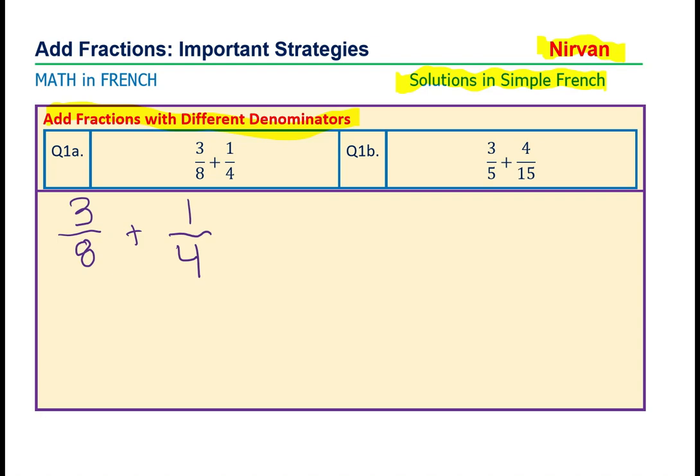Alors, nous devons faire, nous devons chercher le dénominateur moins commune. Dénominateur, D pour dénominateur. Et M pour moins. Et C pour commune.